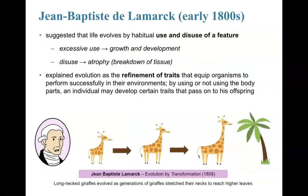Jean-Baptiste Lamarck was a scientist in the early 1800s who gave a huge backbone for Darwin to later develop his theories. Lamarck suggested that life evolves by the habitual use and disuse of a feature. Excessive use of something means that organism will grow and develop that trait; if they don't use something, it will eventually atrophy — meaning break down.